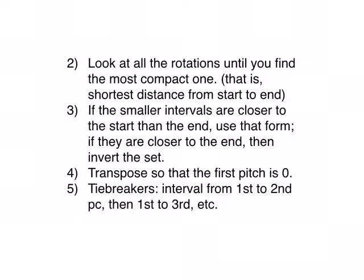Once we know whether we're using the regular form or the inverted form, we will then transpose so that the first pitch is zero. Sometimes you need tiebreakers because there are the same intervals between a couple of pairs of notes, so you're not quite sure where the normal order is. If we need a tiebreaker, then you look at the interval from the first to the second pitch, and then from the first to the third pitch, first to the fourth pitch if you need to, until you finally have one that's more compact than the other.